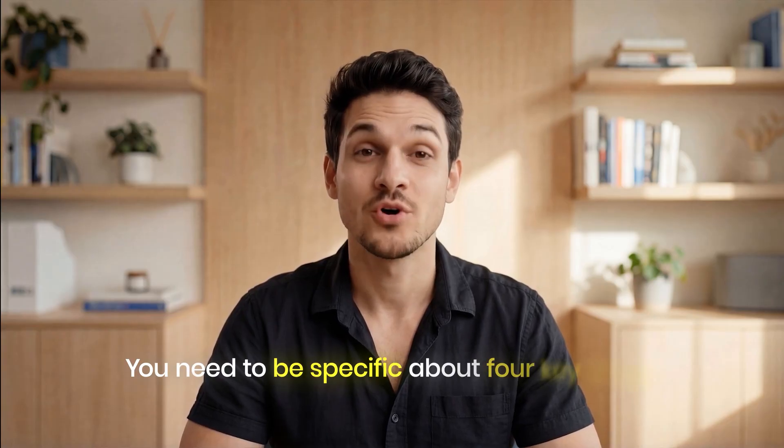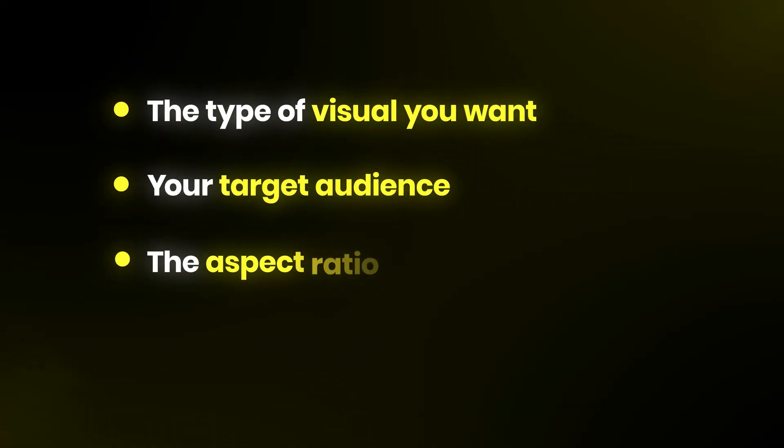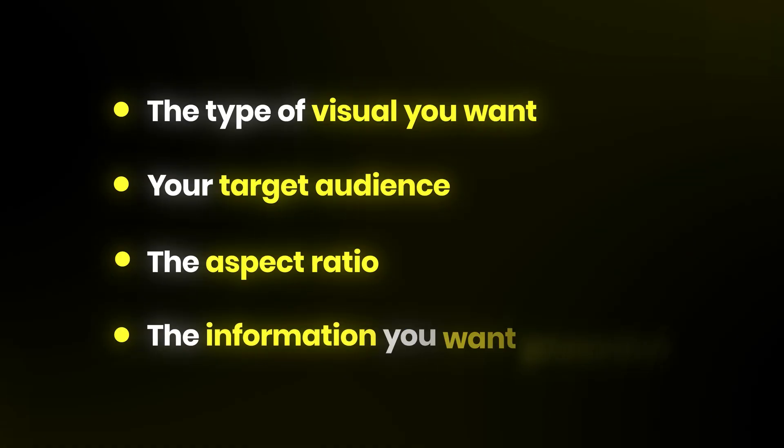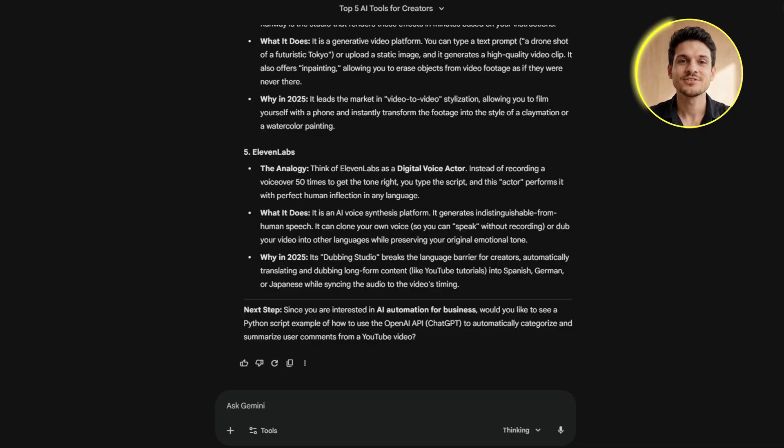This is where most people mess up. They just ask Gemini to make an infographic and wonder why it comes back looking so messy. The secret is in how you structure your prompt. You need to be specific about four key things: the type of visual you want, your target audience, the aspect ratio, and most importantly, the information you want presented.